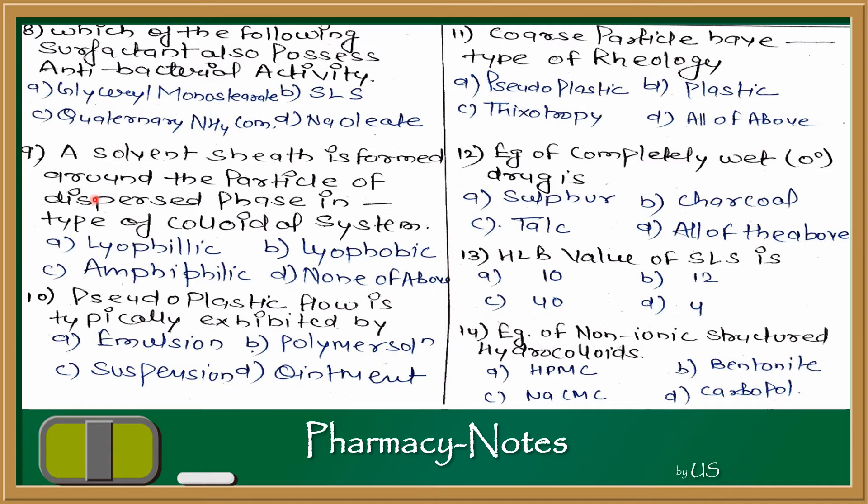Question number 9: A solvent sheet is formed around the particle of dispersed phase in which type of colloidal system? This answer is lyophilic.